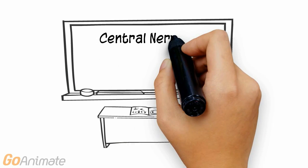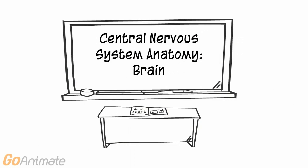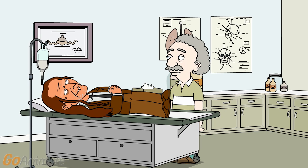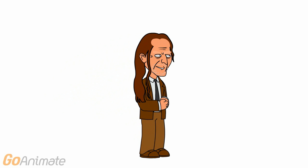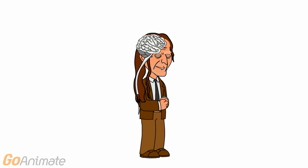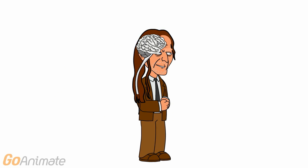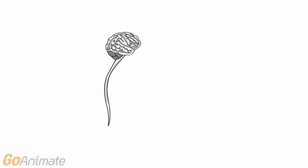Let's learn about the brain. The central nervous system consists of the brain and spinal cord.